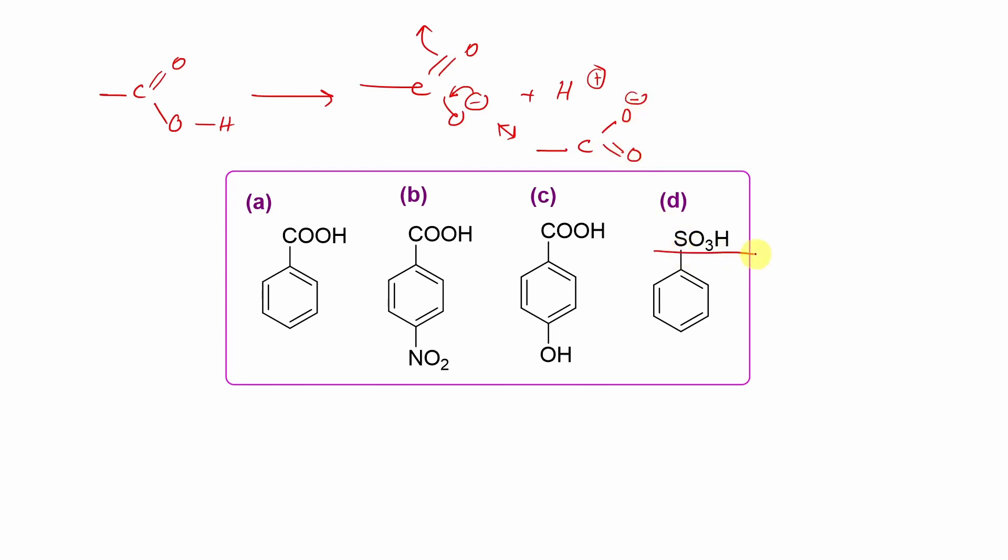Two canonical forms are possible. Now, if you look at the second one, SO3H, here SO3H looks like this. If you remove the proton, I mean H+, what is remaining?